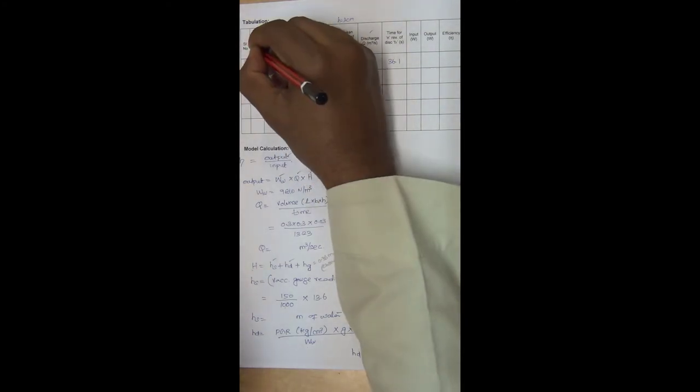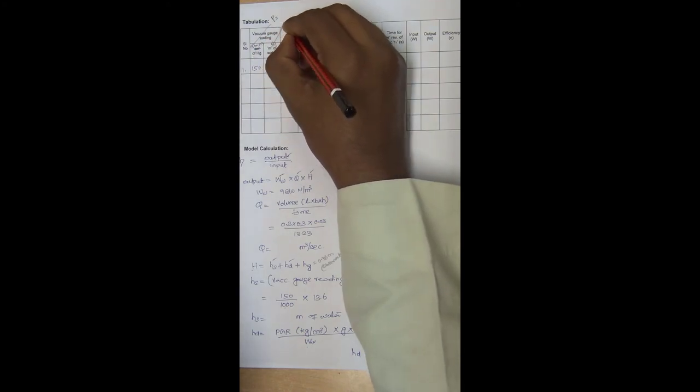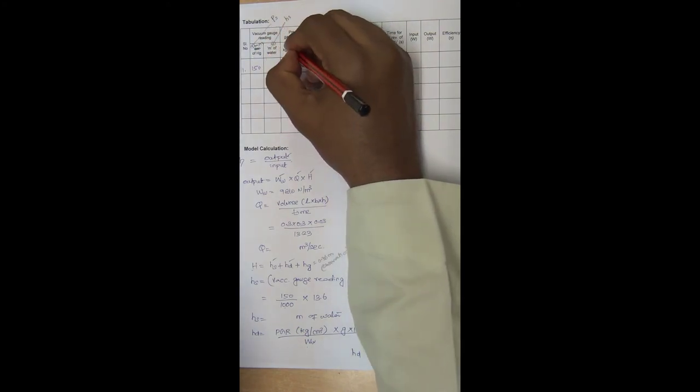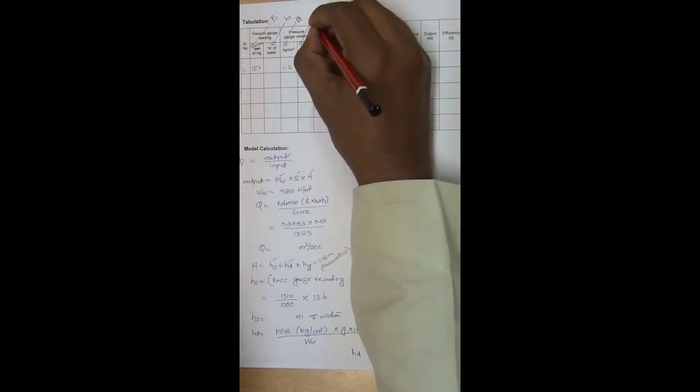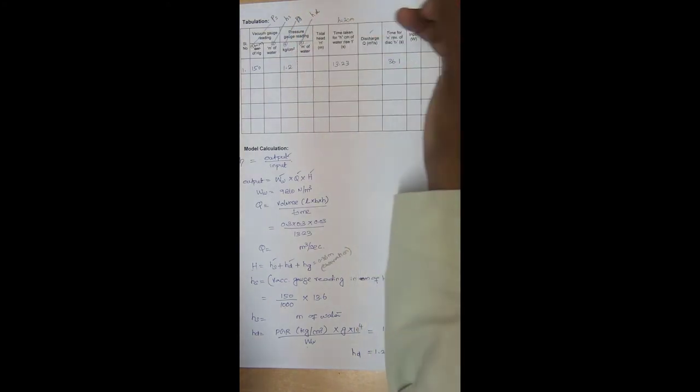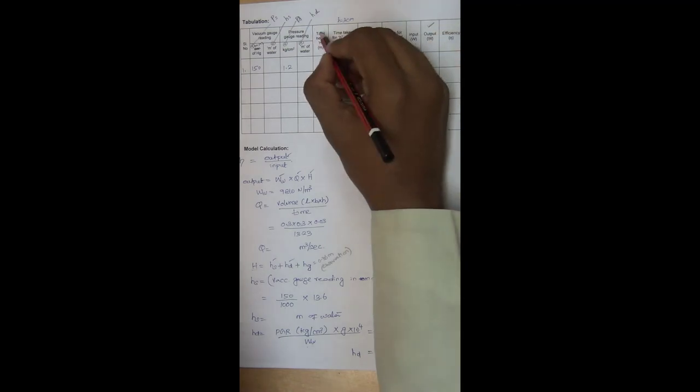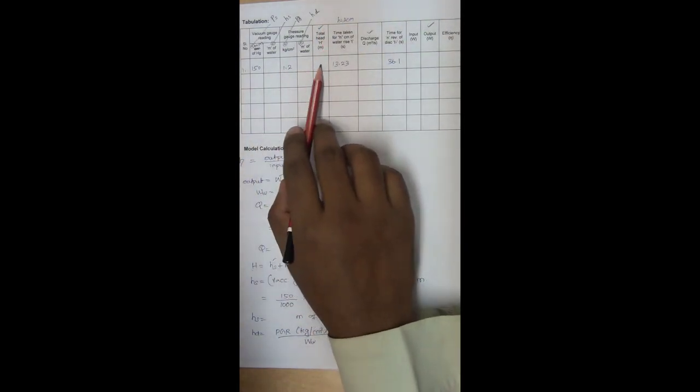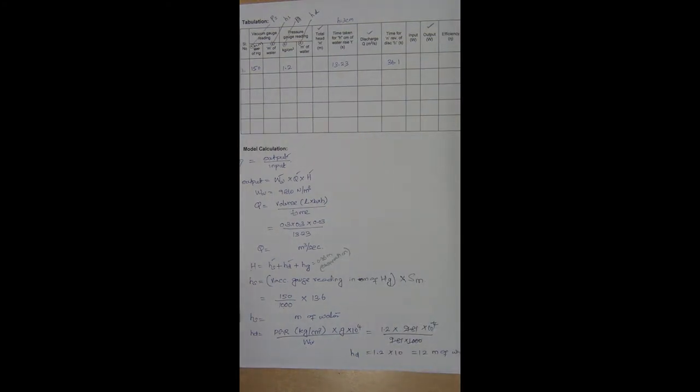So let us name this as Ps, let us name this as Hs, this as Pd, and this as Hd. Here we have calculated this column, we have calculated this column, and we have calculated this column also. So this completely filled. Only left is input power. Now to calculate input power.